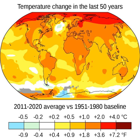Average surface air temperatures from 2011 to 2020, compared to the 1951 to 1980 average. The main driver for increased global temperatures in the industrial era is human activity. Natural forces add relatively minor variability. CO2 concentrations over the last 800,000 years, as measured from ice cores (blue and green) and directly (black).